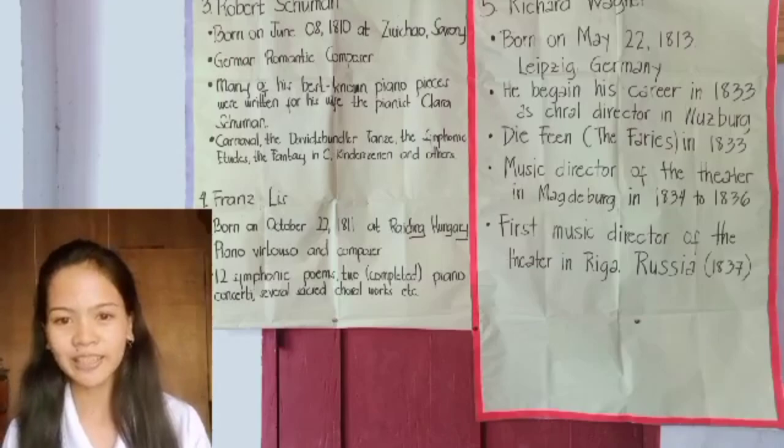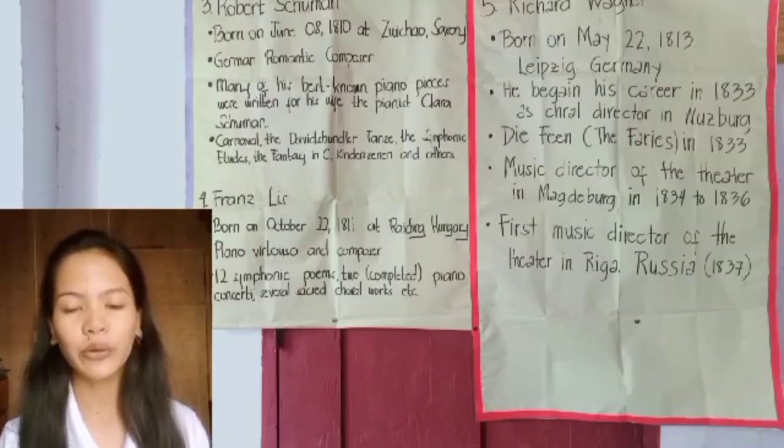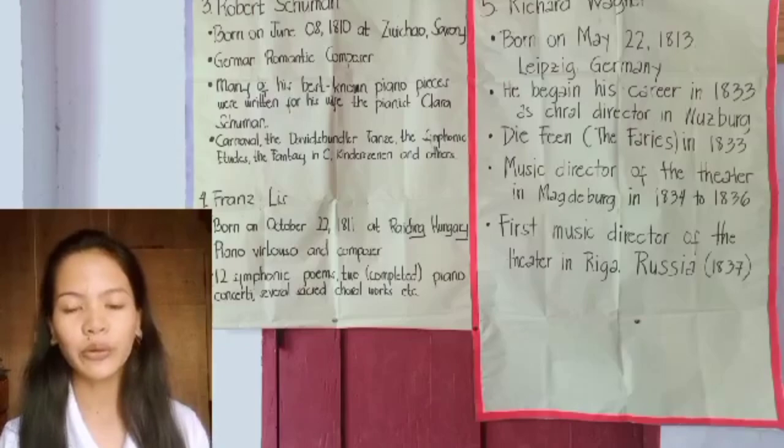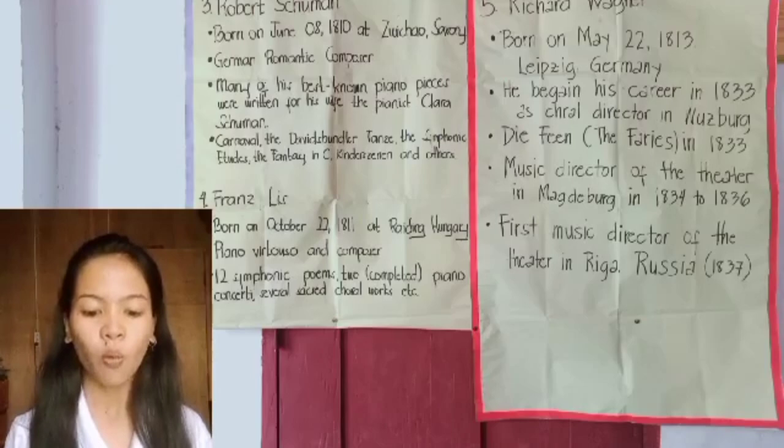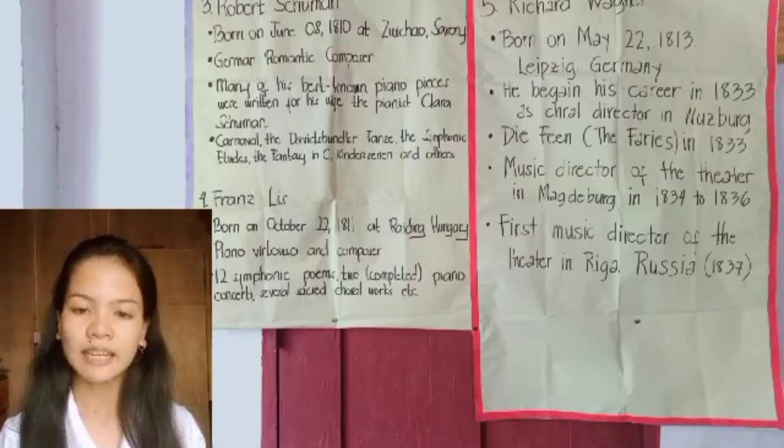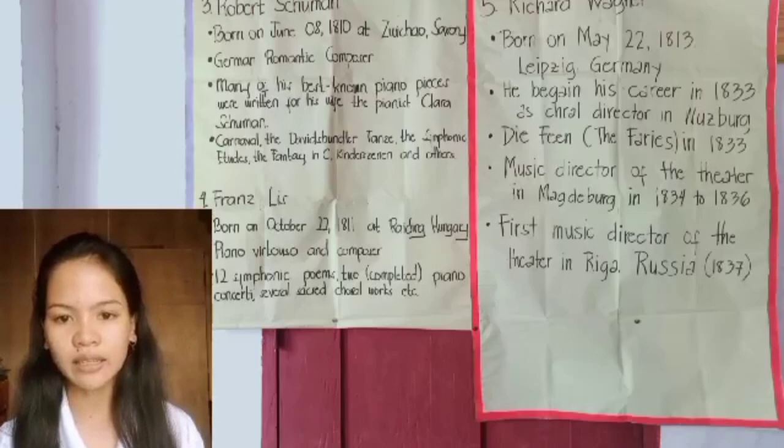Richard Wagner — full name Wilhelm Richard Wagner — was a German composer, theater director, polemicist, and conductor chiefly known for his operas. Unlike most opera composers, Wagner wrote both the libretto and the music for each of his stage works. He was born on May 22, 1813 in Leipzig, Germany, and died on February 13, 1883. The cause of death was myocardial infarction.